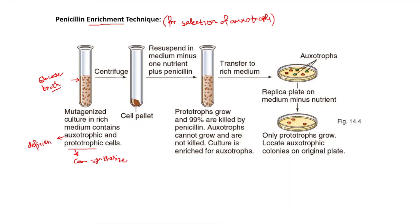This concept is very important because on the basis of this concept we perform this test. Prototrophs can synthesize all nutrients required for growth, but auxotrophs will be deficient in only one nutrient. Because of that, auxotrophs added to any medium that lacks that particular nutrient will not be able to grow. Only if we supplement that missing nutrient into the media from outside will auxotrophs be able to grow.